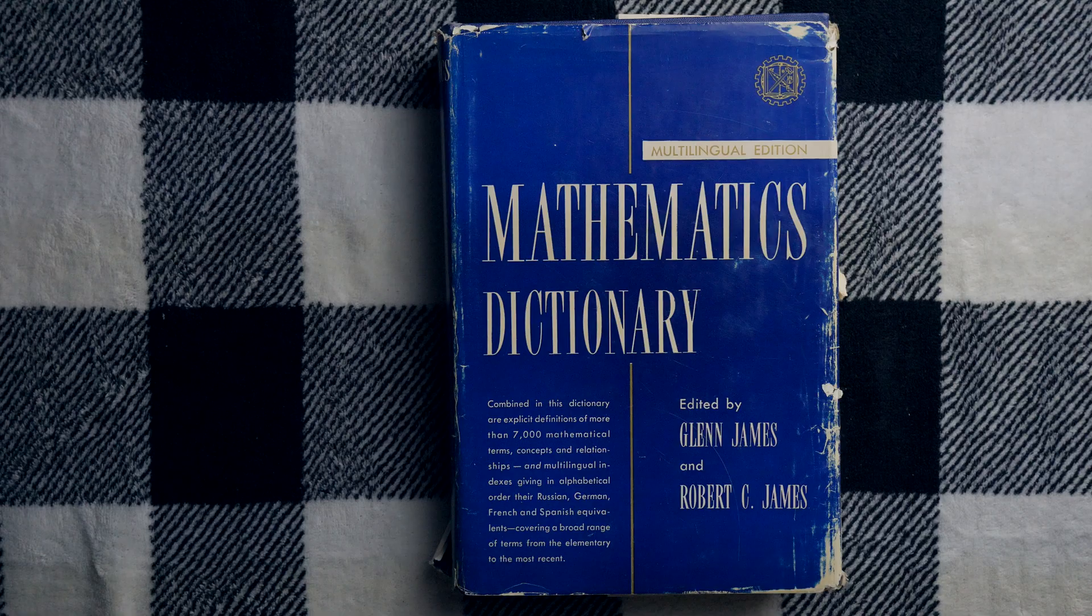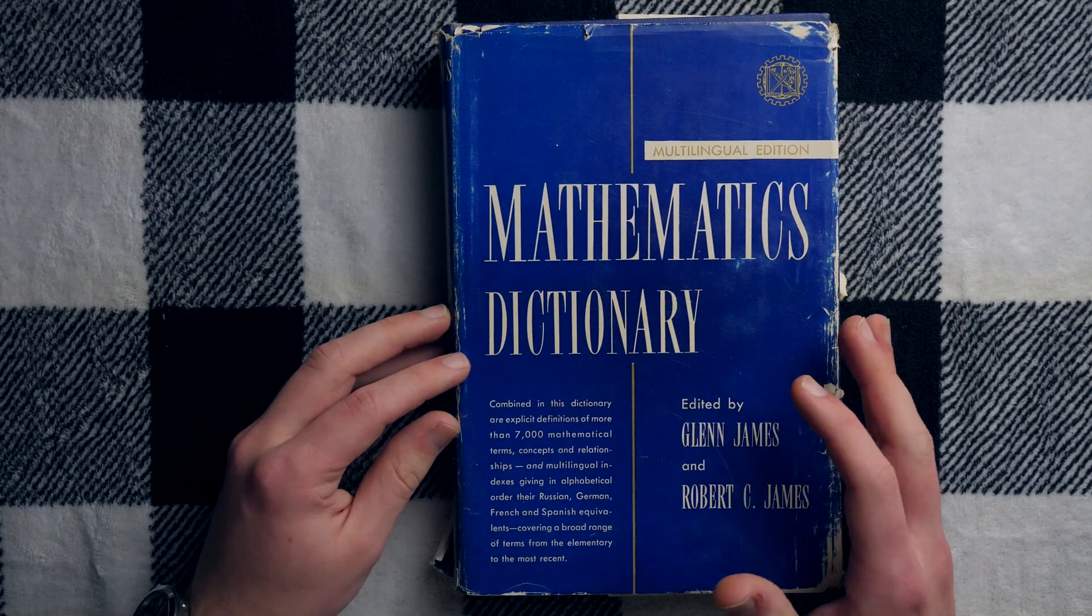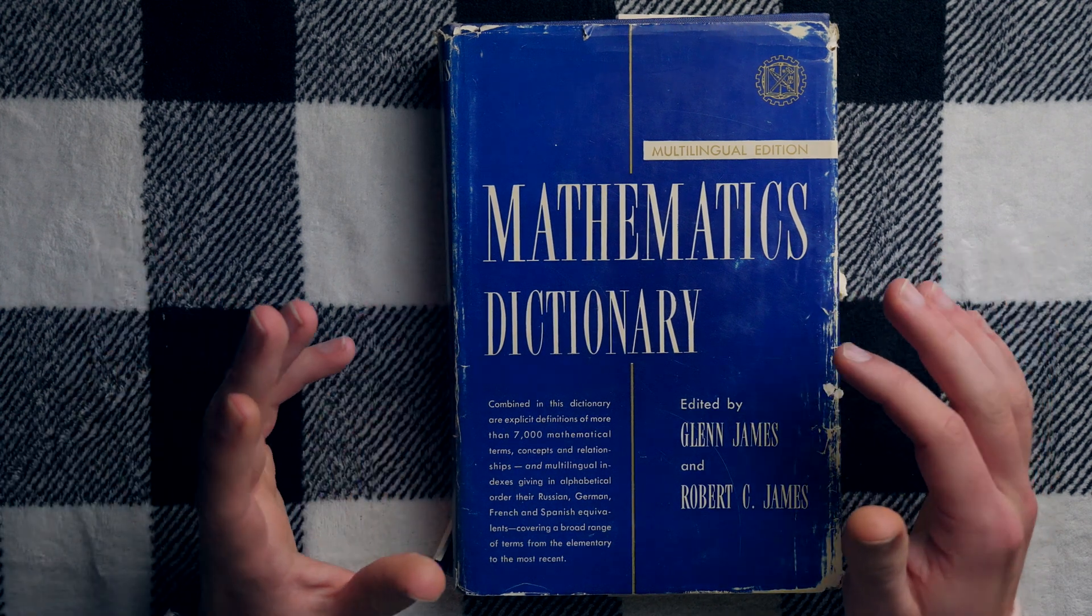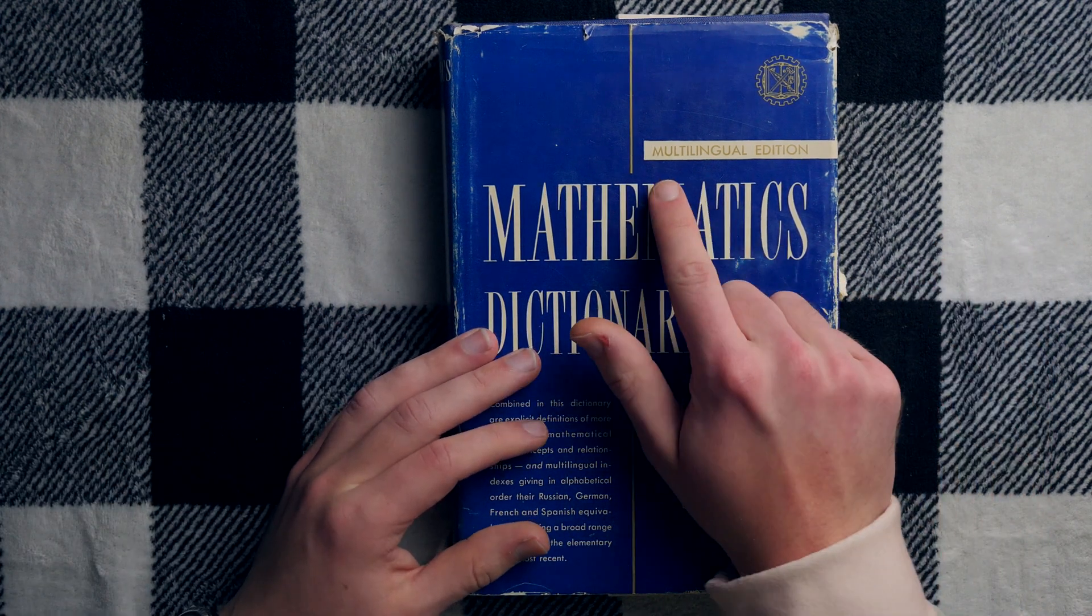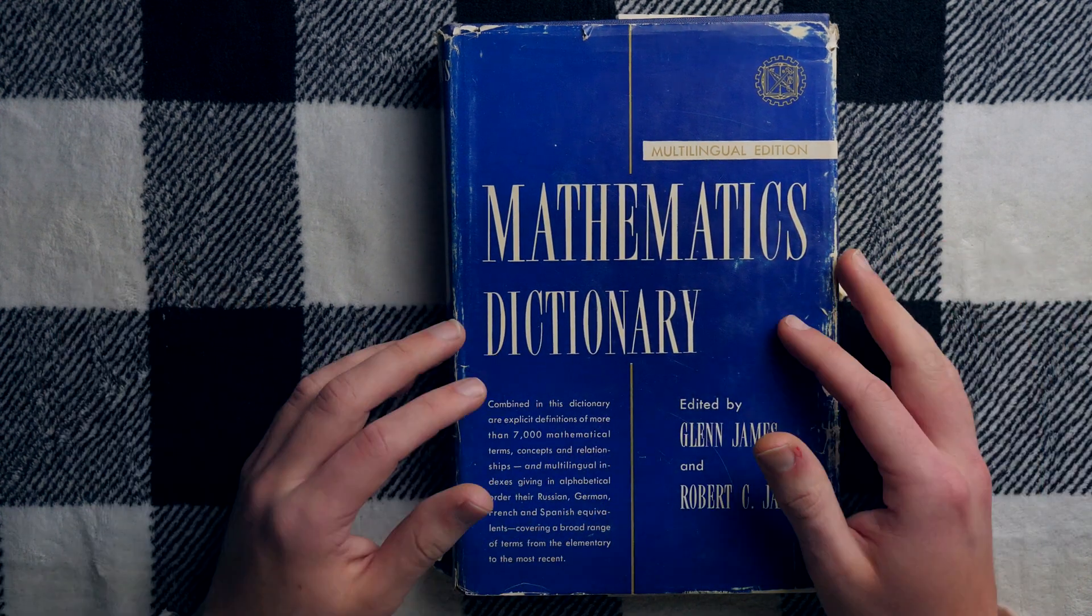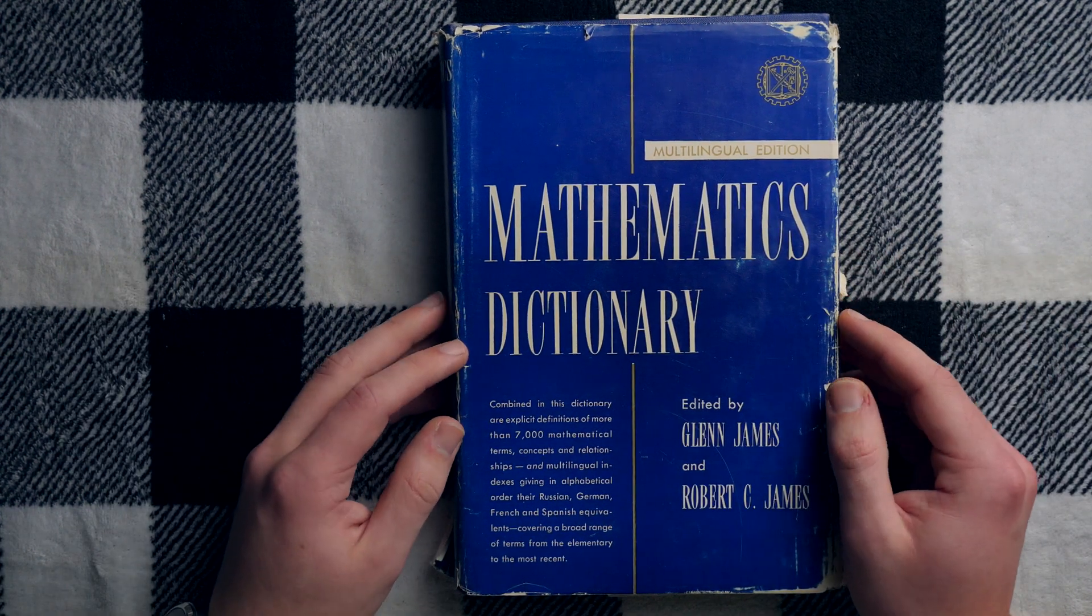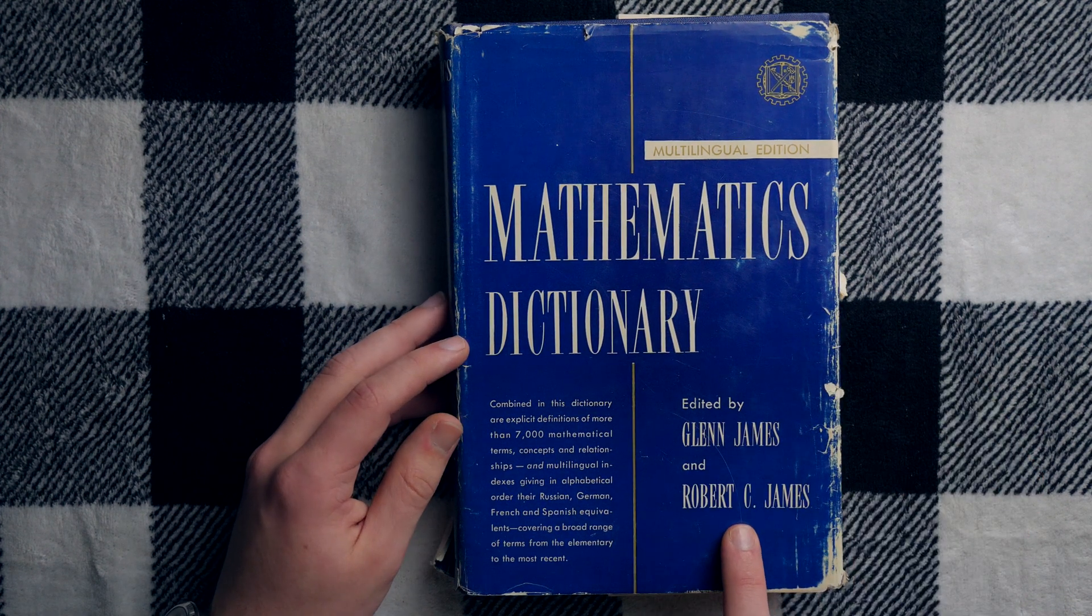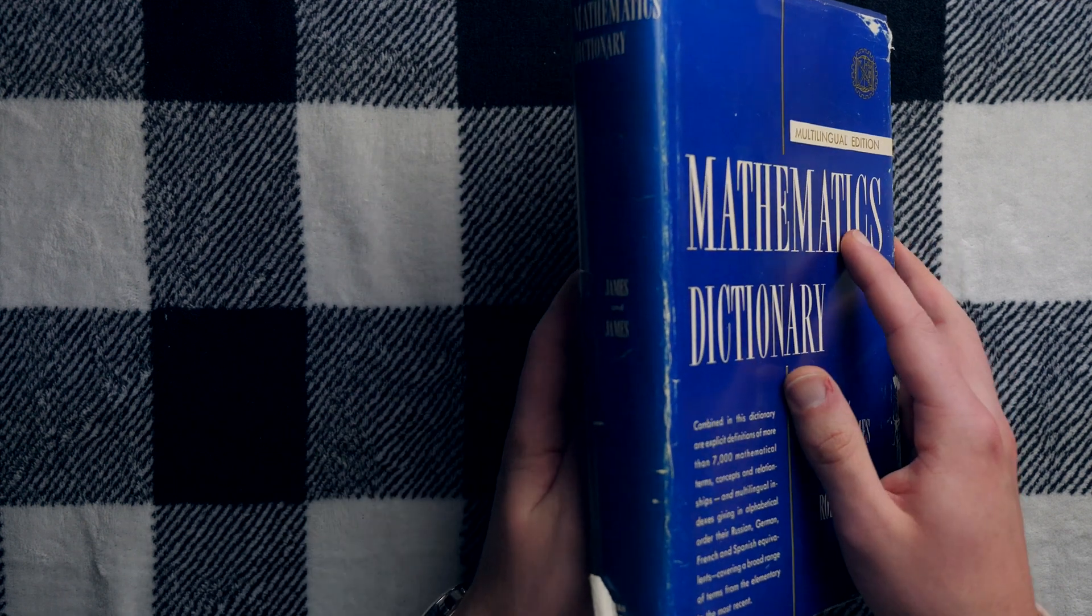Bam! Math Dictionary! How about that? This is a mathematics dictionary filled up with mathematical terms. It's the multilingual edition, so it's actually got something in the back just filled with a multilingual index, which is pretty cool. Edited by Glenn James and Robert C. James, so here on the spine of the book it says James and James, which is pretty cool.